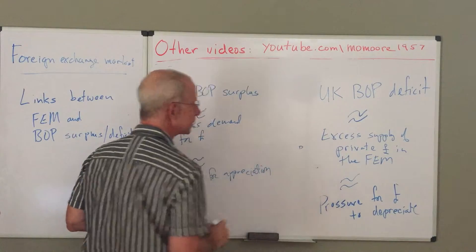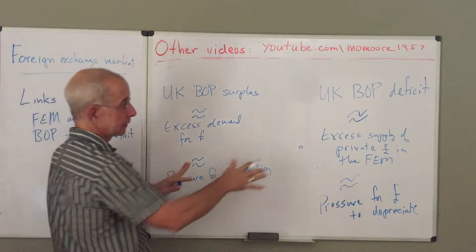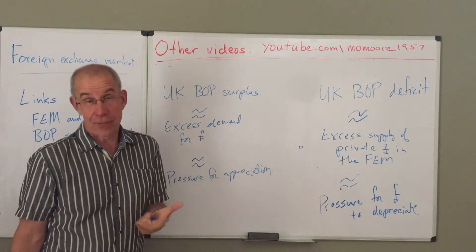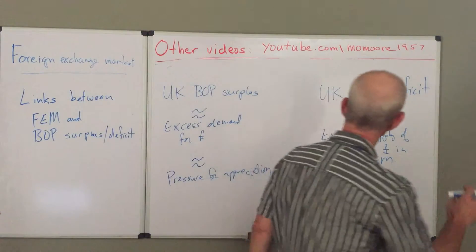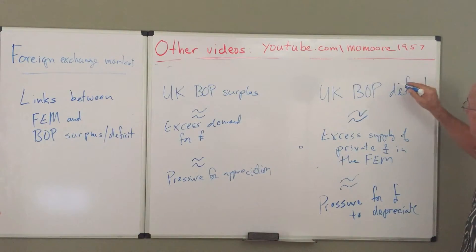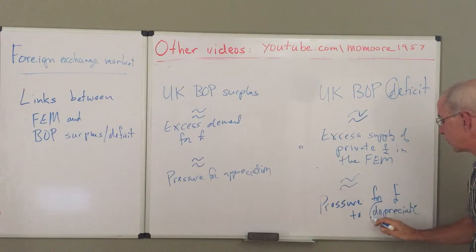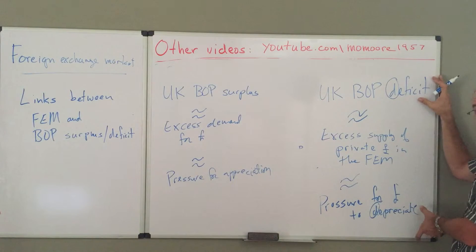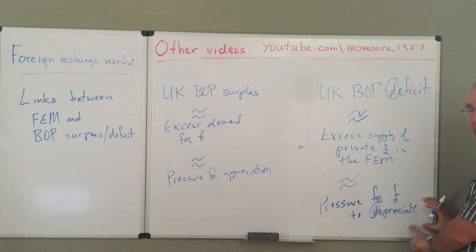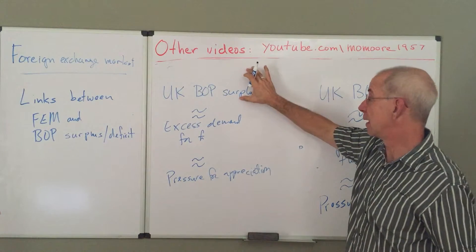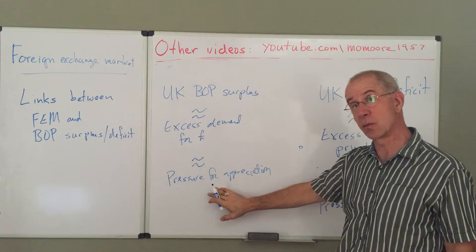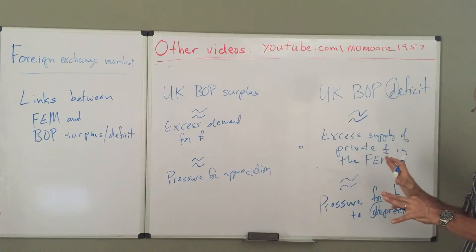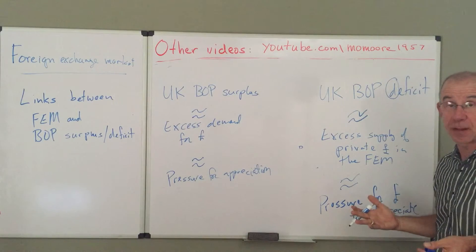For a lot of people it's hard to remember these relationships, but one helpful way is that a UK balance of payments deficit is related to pressure for depreciation — a fall in value. So settle in your mind that the D's go together: balance of payments deficit and pressure for depreciation go together. And then a surplus goes together with pressure for appreciation. These are very important relationships to keep in mind as we look at both fixed and flexible exchange rates.